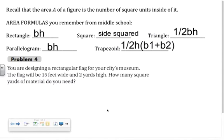In problem four you're finding the area of a rectangular flag, but I would hope that you'd notice a problem with the problem. This width is given to you in feet, and this height is given to you in yards. You could convert the yards into feet, or you could convert the feet into yards, but since the question is asking how many square yards of material you need, let's convert the 15 feet into yards. 15 feet equals 5 yards, because 3 feet equal a yard.